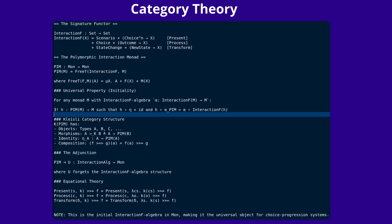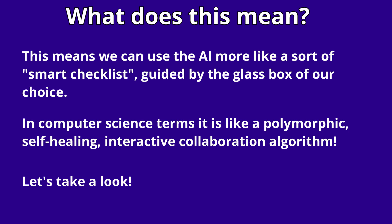Additionally, at least according to the AI, a category theorist would call this a universal polymorphic interaction monad, which appears to be something new. What this means for the rest of us is that we can use AI more like a sort of smart checklist guided by the glass box of our choice.